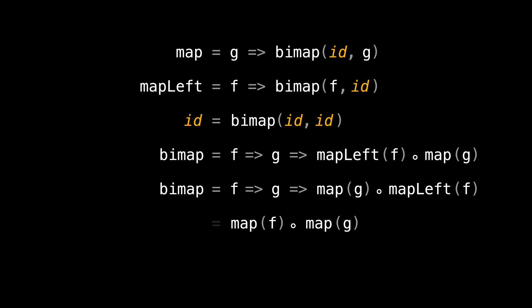What happens if we compose map of f and map of g? We've already seen this in the functor composition video. This will lead to map of f and g composed. What about composing mapLeft? You guessed it right, it would be similar to composing map. Composing mapLeft of f and mapLeft of g functions is same as mapLeft of f and g composed.